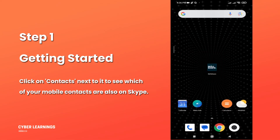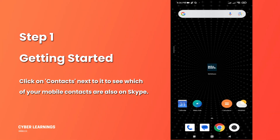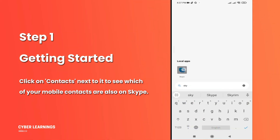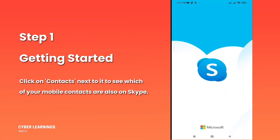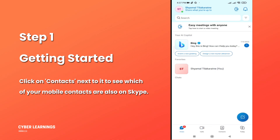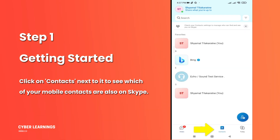Step 1: Getting Started. When you fire up Skype, you'll land on the main messaging screen. This is where all your chat conversations hang out. You'll find your call history. Click on Contacts next to it to see which of your mobile contacts are also on Skype.